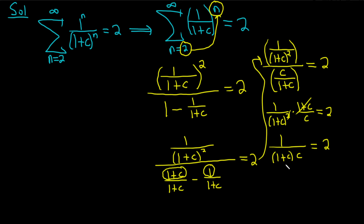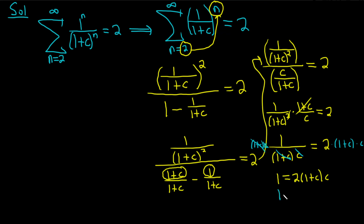Let's multiply both sides by (1 + c) · c. That gives us 1 equals 2 times (1 + c) times c. The (1 + c)·c cancels on the left side, and we distribute on the right. This is 1 equals 2 · 1 · c plus 2 · c · c, so 2c plus 2c squared. Subtract the 1 and we get a quadratic equation in c: 2c² + 2c − 1 = 0.